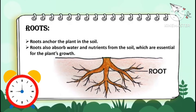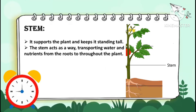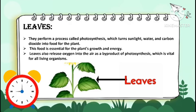The stem supports the plant and keeps it standing tall. The stem acts as a pathway, transporting water and nutrients from the roots throughout the plant. Leaves perform a process called photosynthesis,